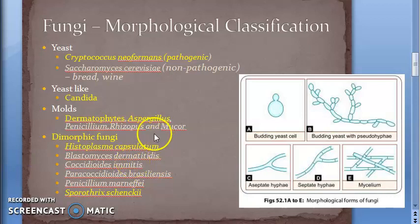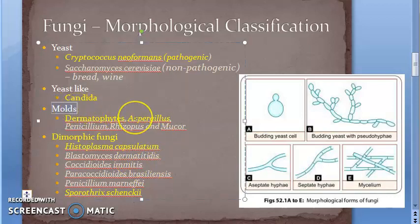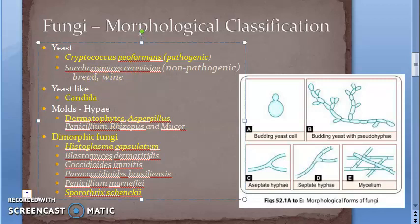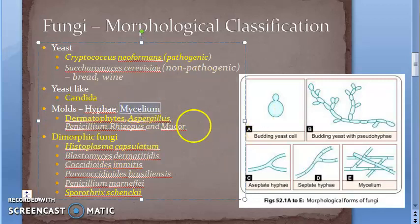In culture medium, mycelia may be categorized as aerial mycelium or vegetative mycelium. Aerial mycelium is the part that projects above the surface, while vegetative mycelium is the part that grows on the surface of the culture medium. Simple - aerial means in the air.